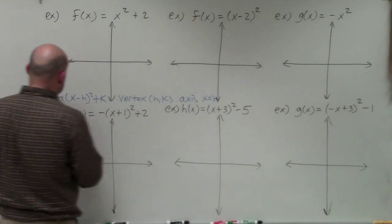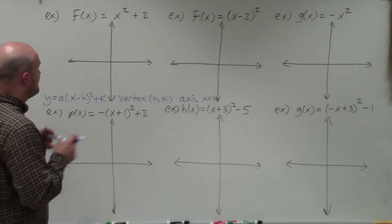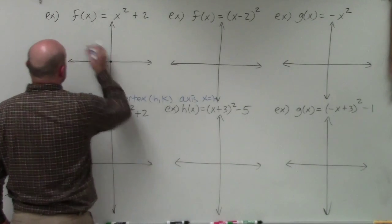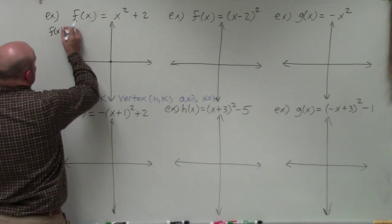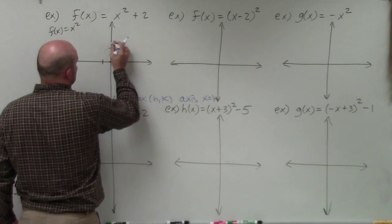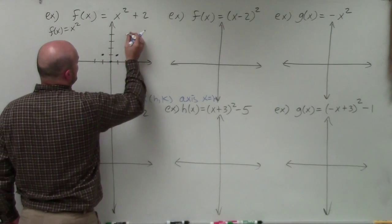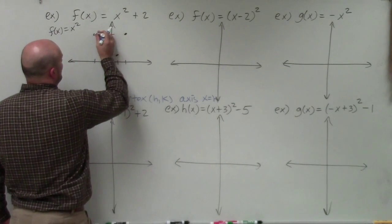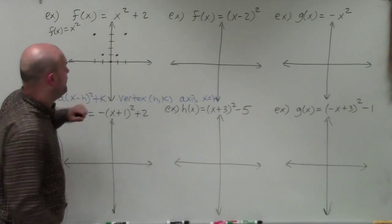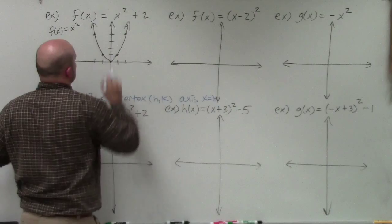For these six examples, I'm going to graph them when a is equal to 1, which makes it easier. First, I'm going to graph what the parent graph looks like — f of x equals x squared. Using a table of values, the graph goes over 1, up 1, and over 2, up 4, because plugging in 1 gives 1 squared equals 1, and plugging in 2 gives 2 squared equals 4. Connecting these gives us the shape of a parabola, or U-shaped graph.